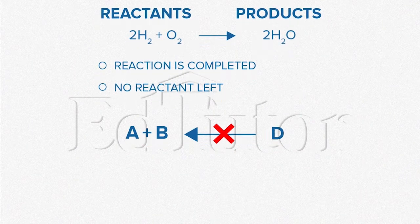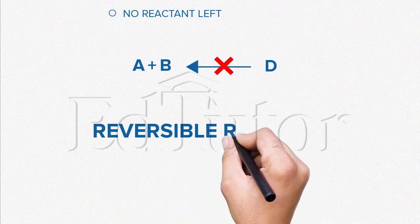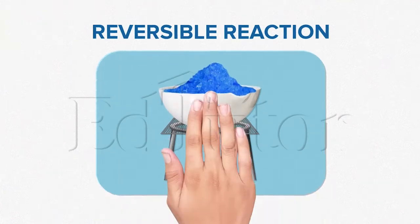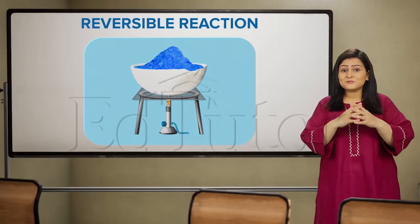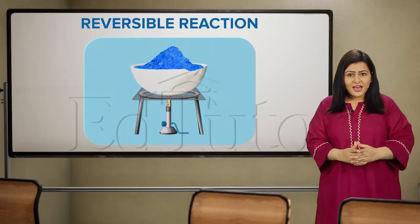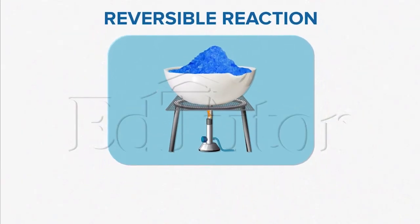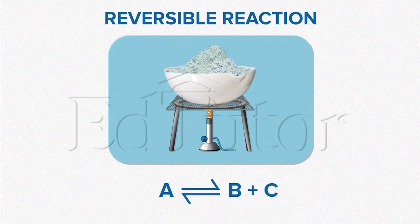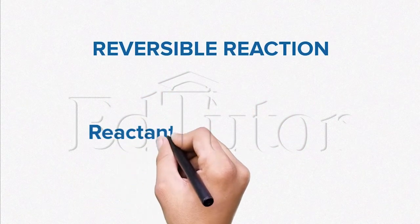Now, there is another type of reaction called reversible reactions. These are reactions in which products are able to form reactants as well. These reactions are represented using double arrows. They signify two reactions.